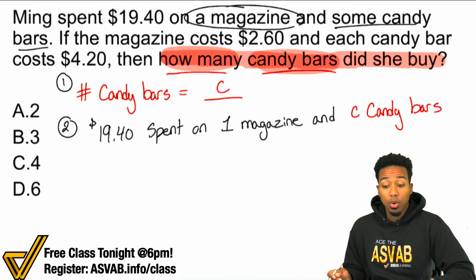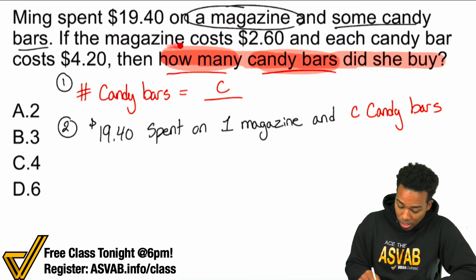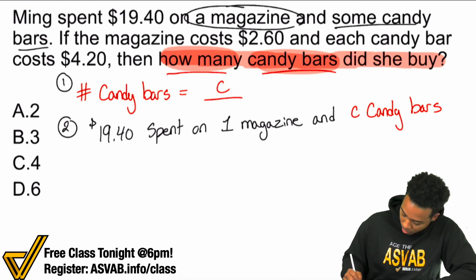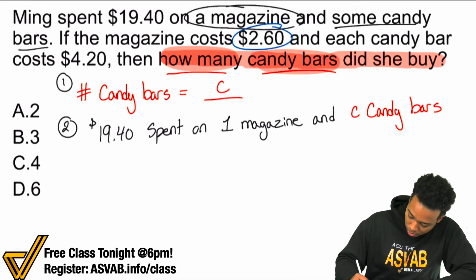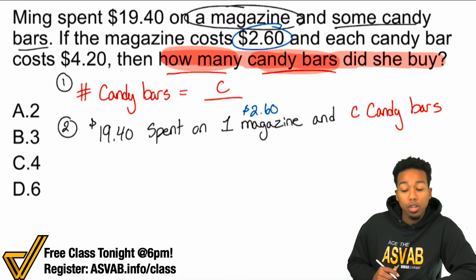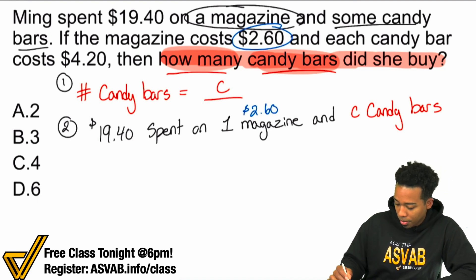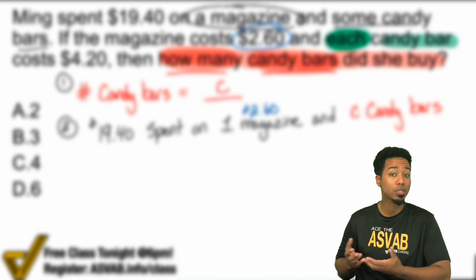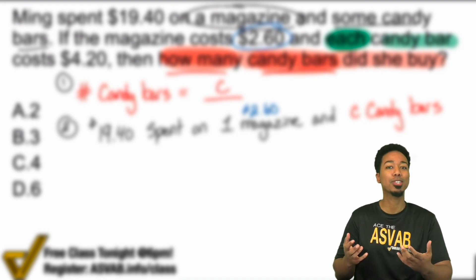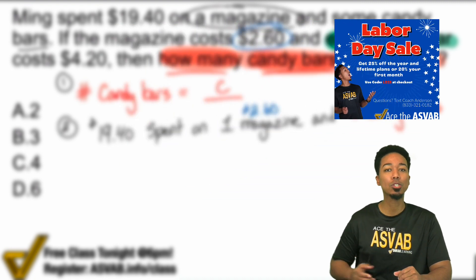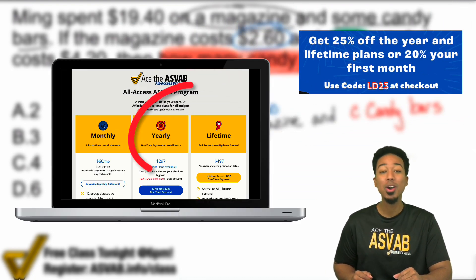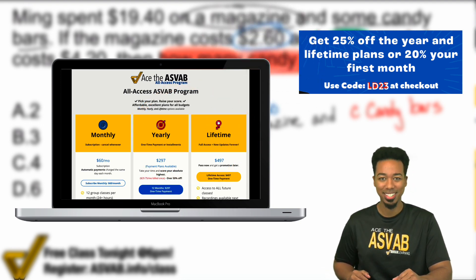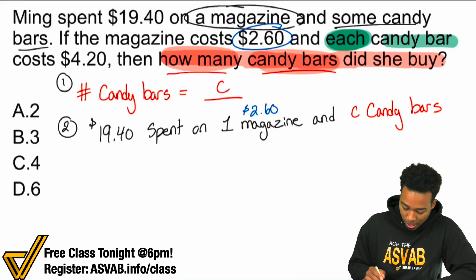What other information do we have? Well, we know the magazine costs $2.60. So one magazine is $2.60 — I'll write that in blue. And then there's a keyword here: 'each candy bar.' Remember, it's really important to use good materials to study for the ASVAB, so take advantage of our Labor Day sale — 20% off your first month of our ASVAB All Access program, or 25% off the year or lifetime packages. Each candy bar is $4.20.